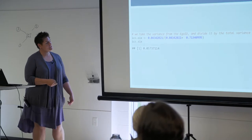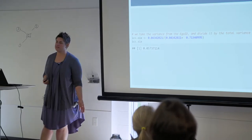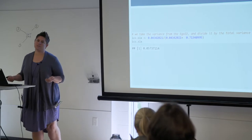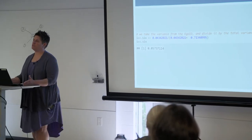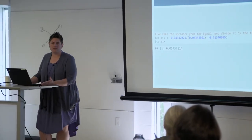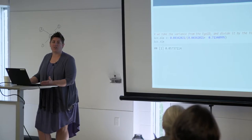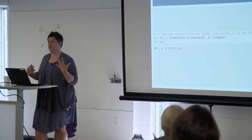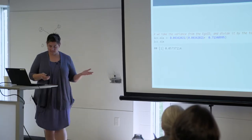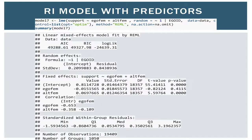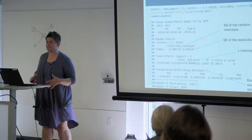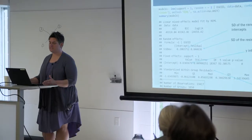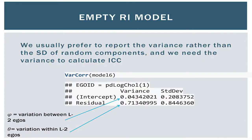Our intraclass correlation here is about 0.06. We can interpret this in terms of magnitude the same way we would interpret an R — so it's a low correlation. There's low correlation of alters within egos, which makes sense given these differences. The ICC is typically what you would report in a paper for the model.